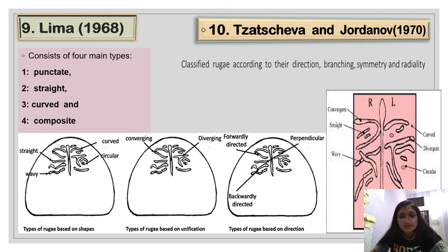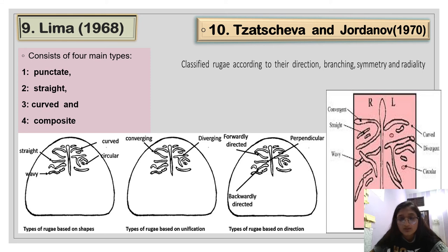The tenth classification is from 1970, in which rugae are classified according to their direction, branching, symmetry, and radiality. The diagram clarifies the criteria used for this classification.